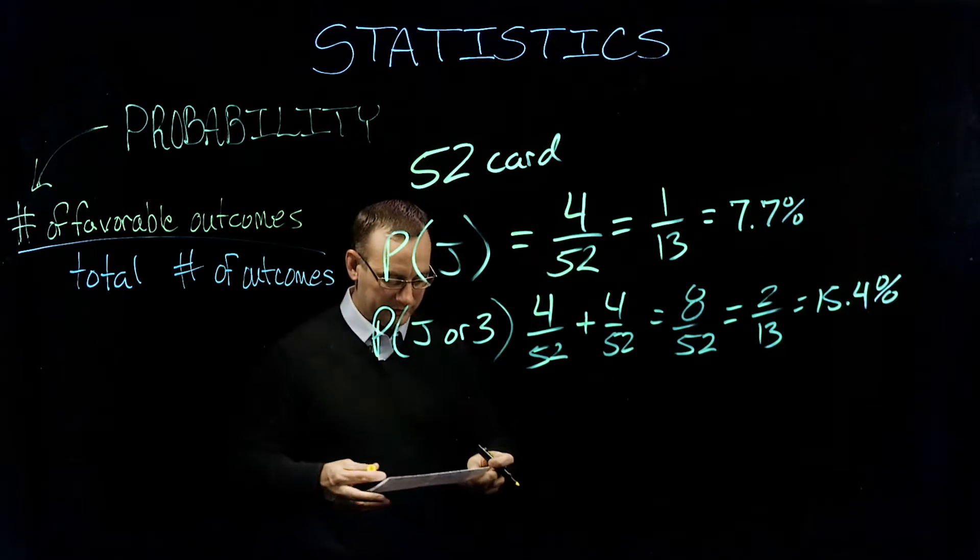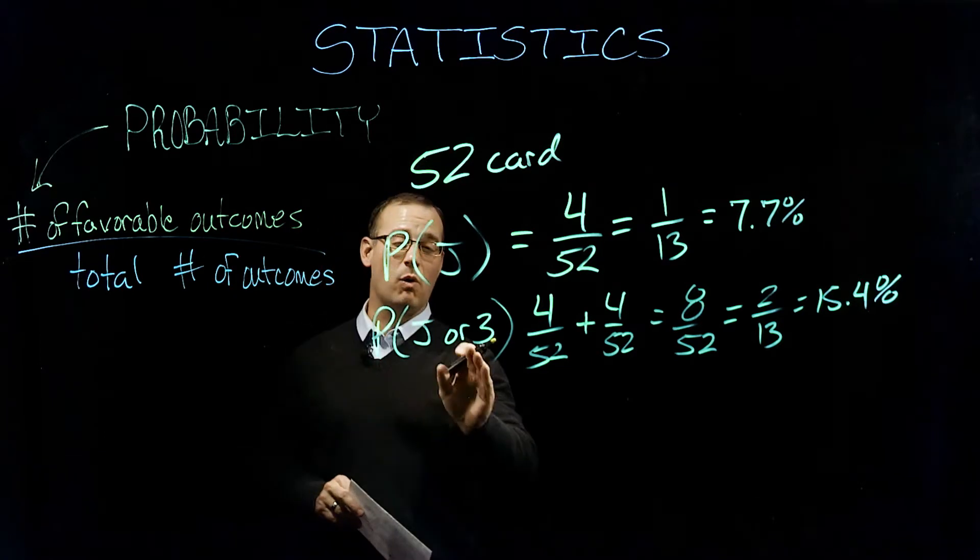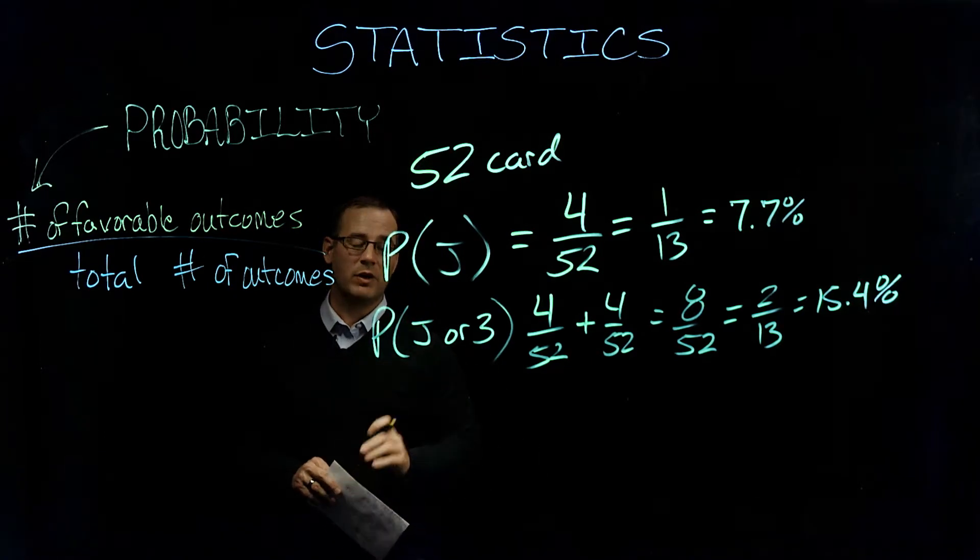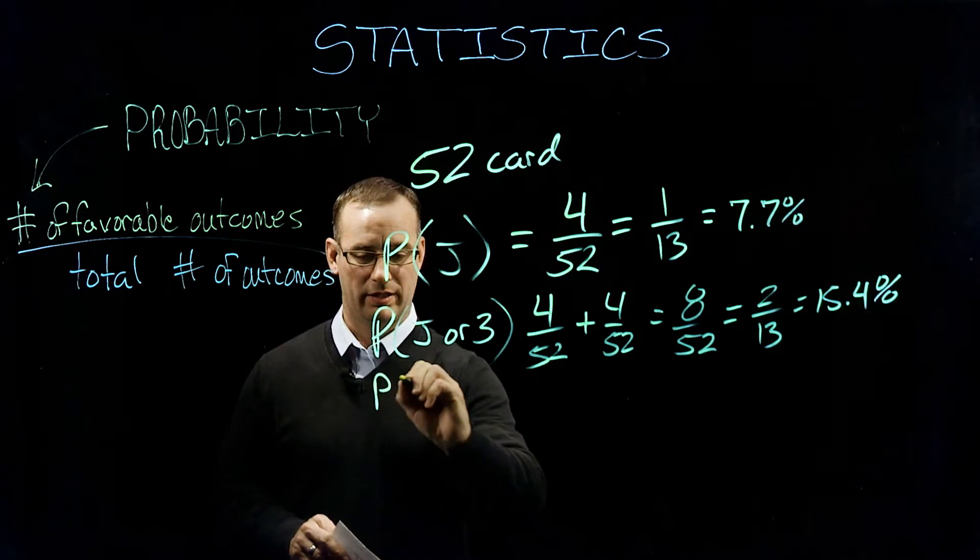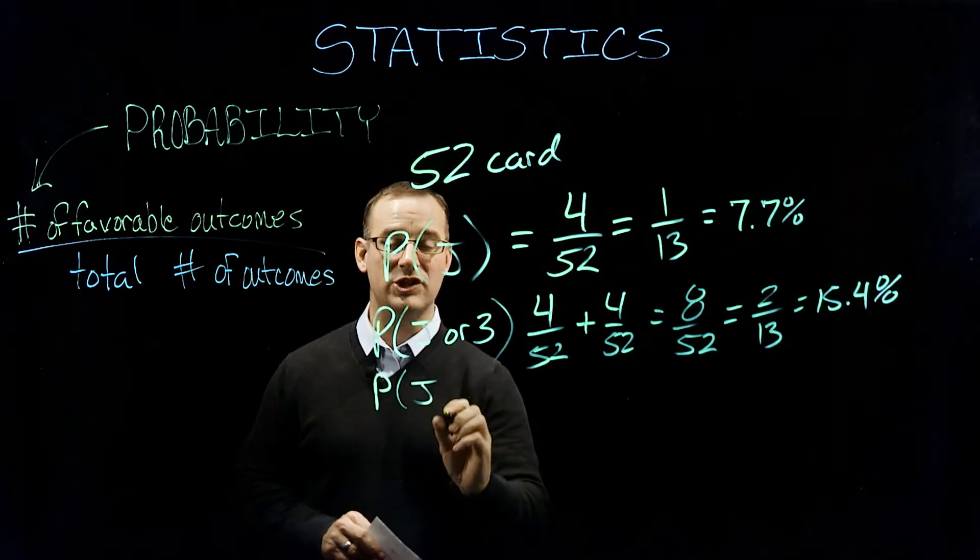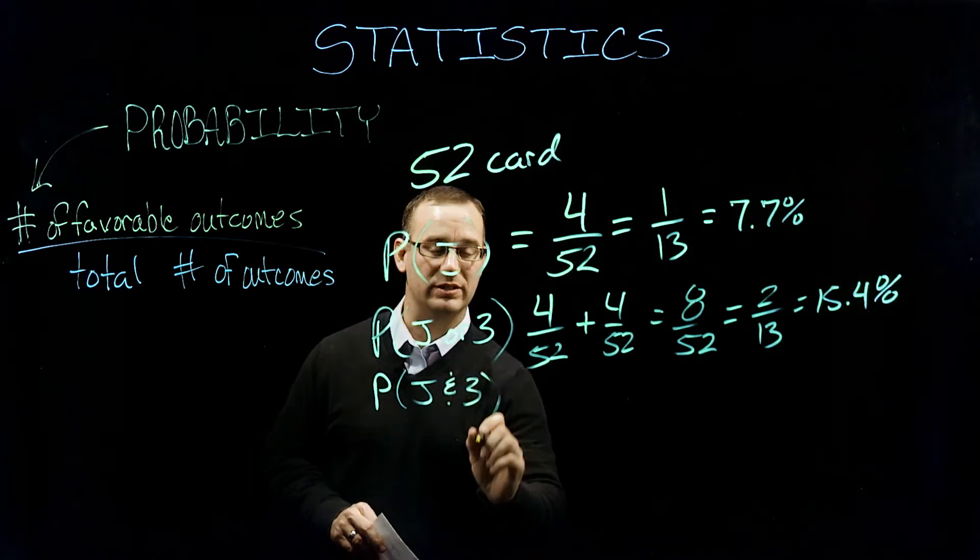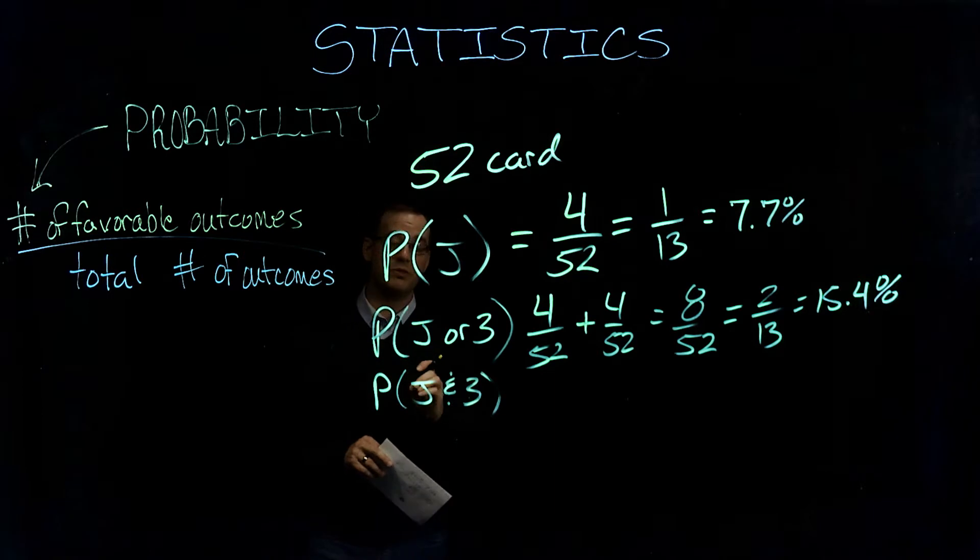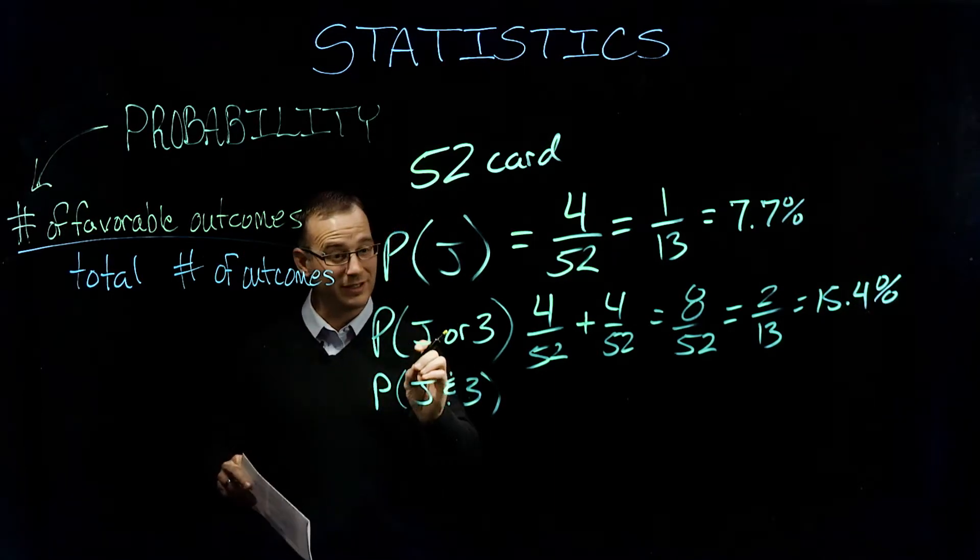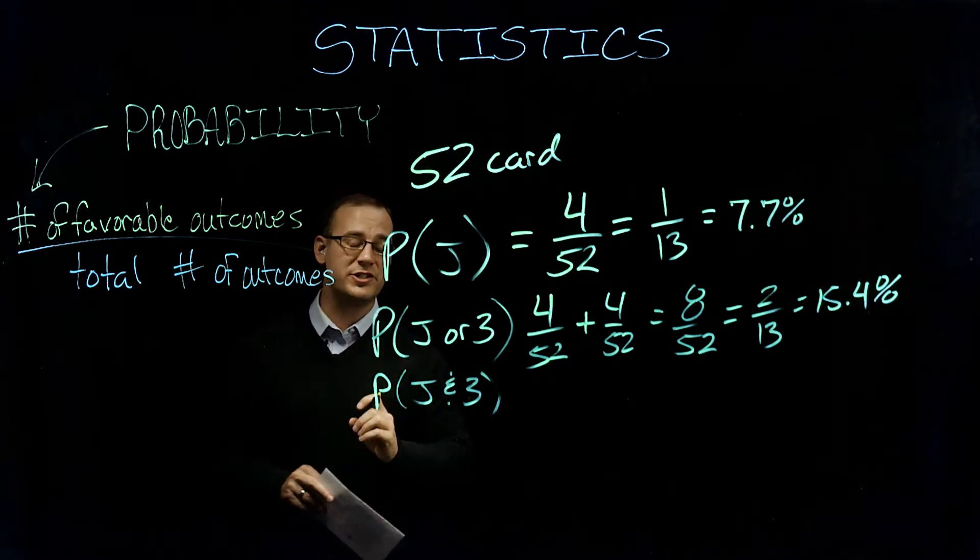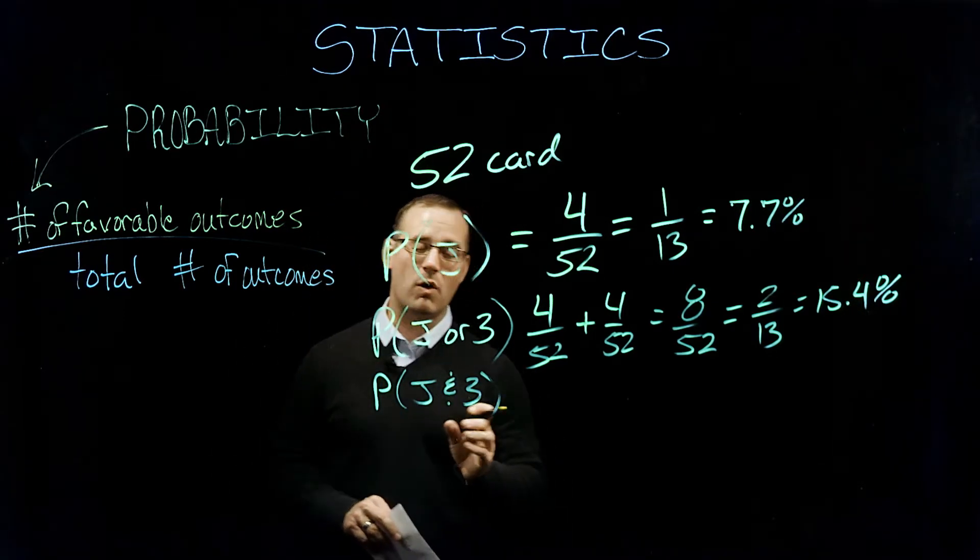Looking at another example, what if we said instead of a jack or a three, what if I asked you to calculate the probability of drawing a jack and a three. So here you're going to draw two cards. You're going to draw the jack, hopefully, and order doesn't matter, but we're going to draw the jack and we're going to draw a three there. So let's walk through this.